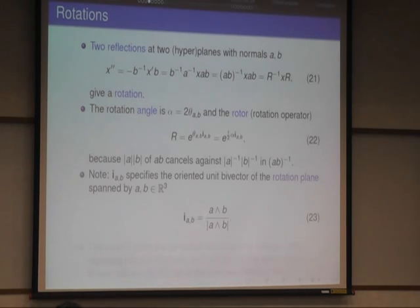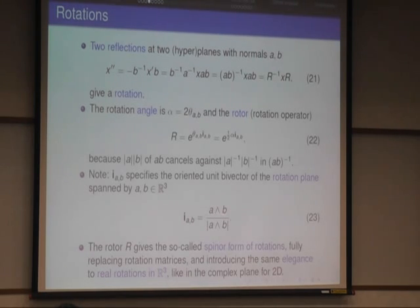And this in three-dimensional space, if I want to know the bi-vector of a plane, which is here, I simply take the outer product of two vectors in the plane, and divide by the norm of the outer product by this area, and then I have it unit. And so this R here gives the spinor form of rotations, and that's fully replacing rotation matrices, and makes computation with rotations also as elegant as with rotations in the complex plane. Now this kind of elegance of rotations in the complex plane is carried over to higher dimensions.